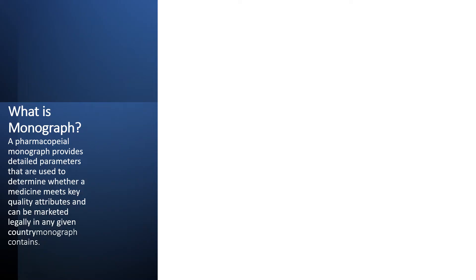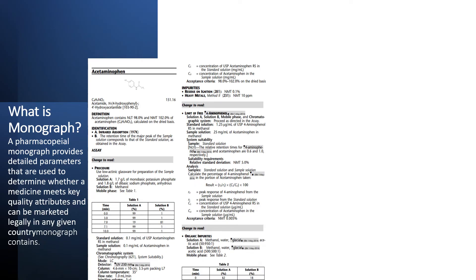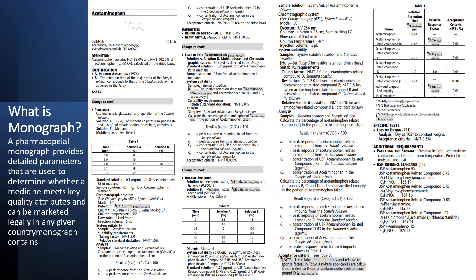It contains testing procedures and other regulatory guideline details related to drug materials or drug products. A pharmacopoeial monograph provides detailed parameters used to determine whether a medicine meets key quality attributes and can be marketed legally in a given country. For example, in the USP monograph for acetaminophen, various tests are provided, and based on these tests we perform analytical testing to ensure product quality.